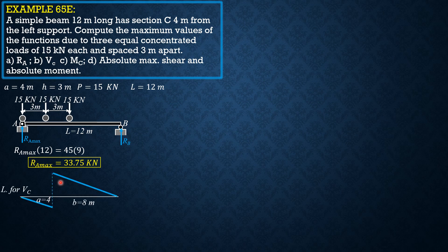This is the influence line for shear at C. A is 4, B is 8. The negative ordinate is −A/L = −4/12 = −1/3, and the positive ordinate is B/L = 8/12 = +2/3.